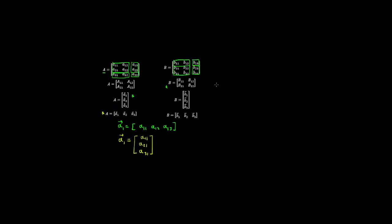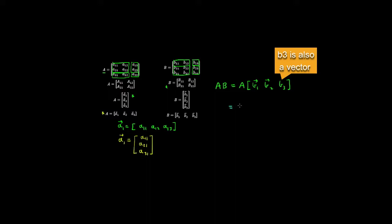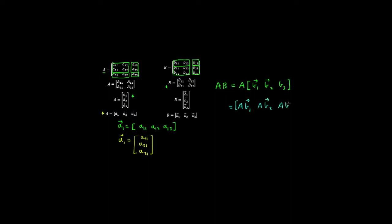Suppose we want to perform a multiplication — multiply A by B. We can write this as A multiplied by a matrix of column vectors B1, B2, and B3. What we get is A multiplied by column vector B1, then A by column vector B2, and A by column vector B3.